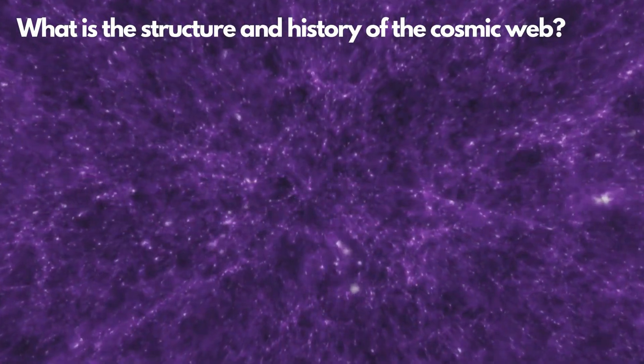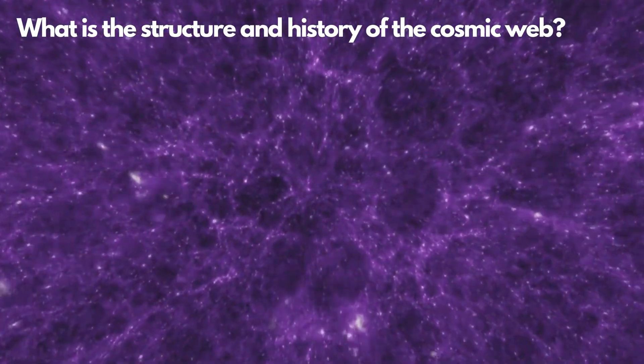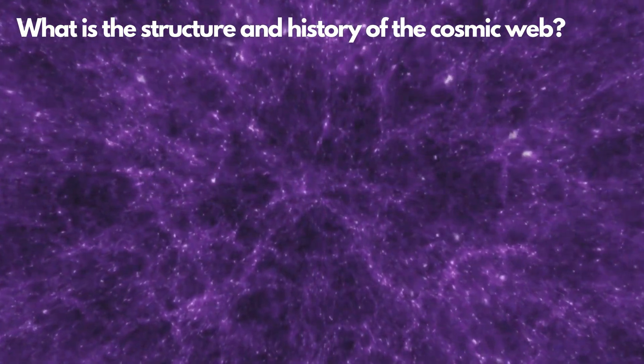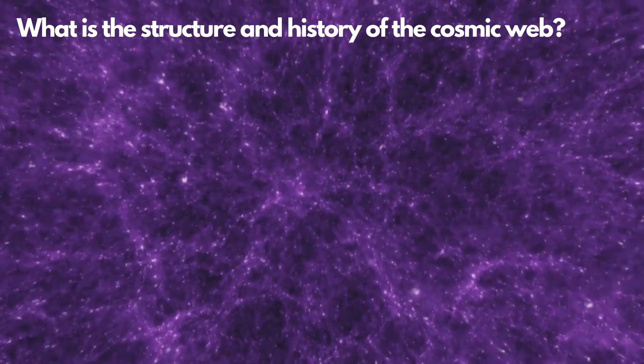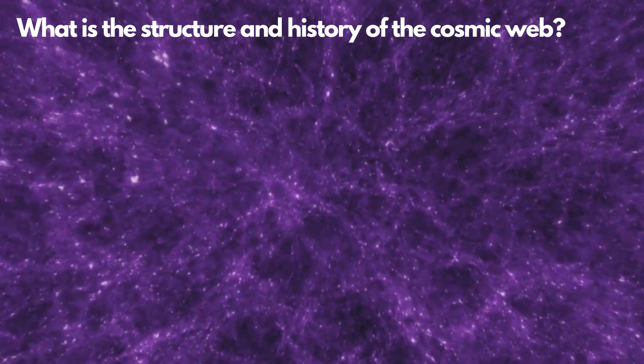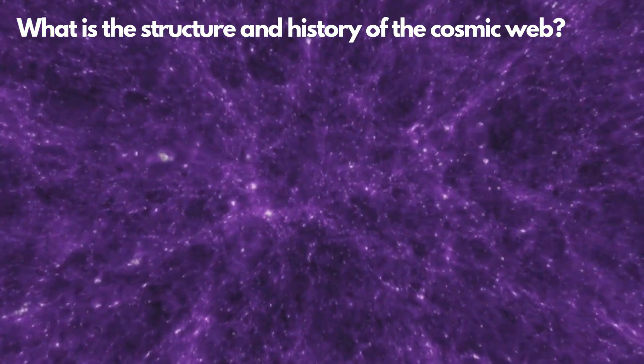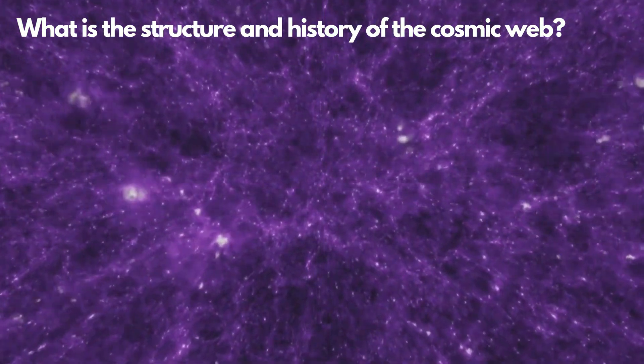The universe is comprised of matter arranged in a vast network known as the cosmic web. This web resembles an enormous structure consisting of clusters of galaxies interconnected by strands of gas and unseen dark matter. Interspersed within this network are expansive cosmic voids, vast empty regions devoid of significant matter.